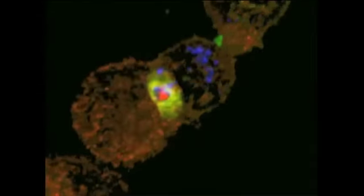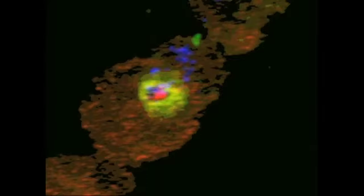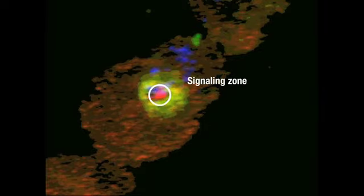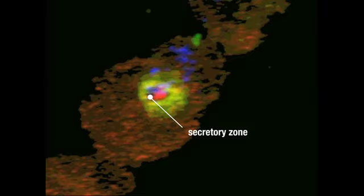If we look closely at the synapse, we can see its structure. The outer ring contains the adhesion molecule, and the inner ring is divided into two parts, one containing the signaling molecules, and the other, dark in this image, is the secretory zone.